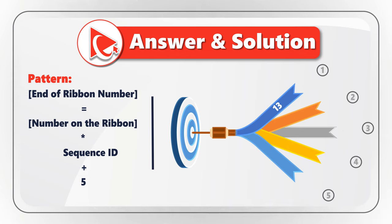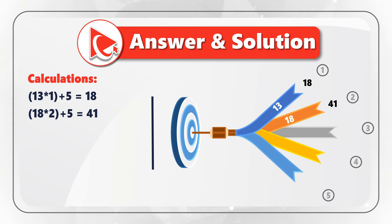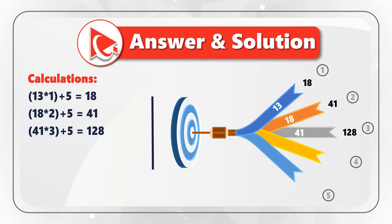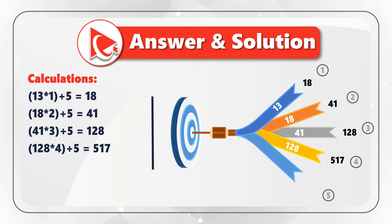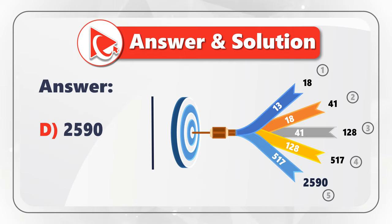The number at the end of the ribbon is calculated based on the sequence ID and the number on top of the ribbon. The formula is: end-of-ribbon number equals number on top multiplied by sequence ID, plus 5. For example, ribbon 1: 13 × 1 + 5 = 18. Ribbon 2: 18 × 2 + 5 = 41. Ribbon 3: 41 × 3 + 5 = 128. Ribbon 4: 128 × 4 + 5 = 517. So the missing number is 517 × 5 + 5 = 2590. The correct answer is Choice D, 2590.